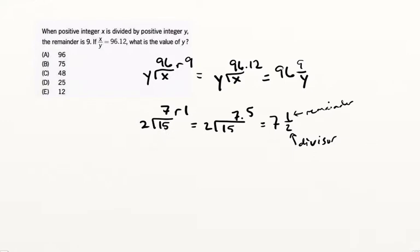I'm just looking at a simple arithmetic case that has an analogous structure. So what we know is that the remainder over the divisor, 1 over 2, is equal to the 0.5. So we can say the 9 over y, of course, is equal to the 0.12.